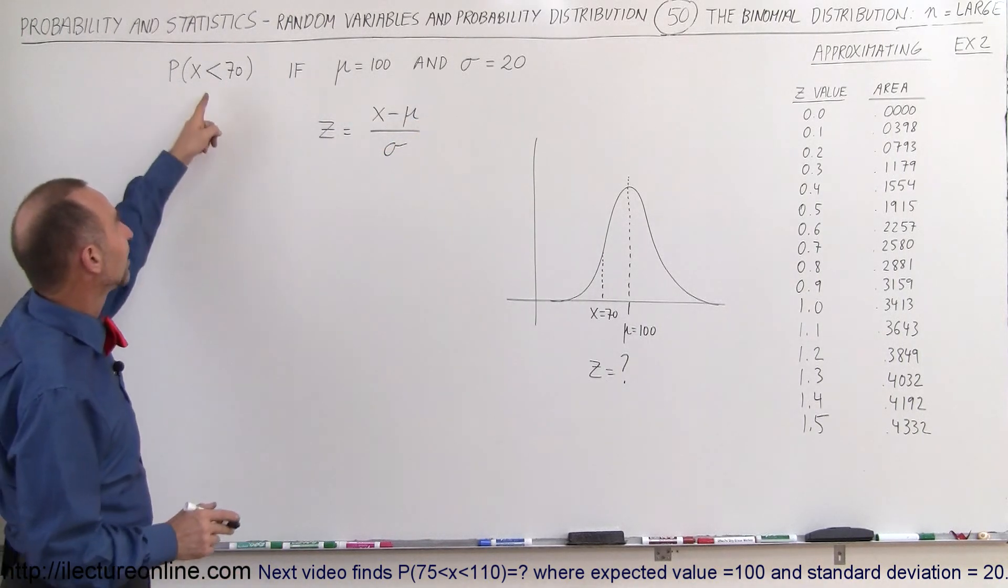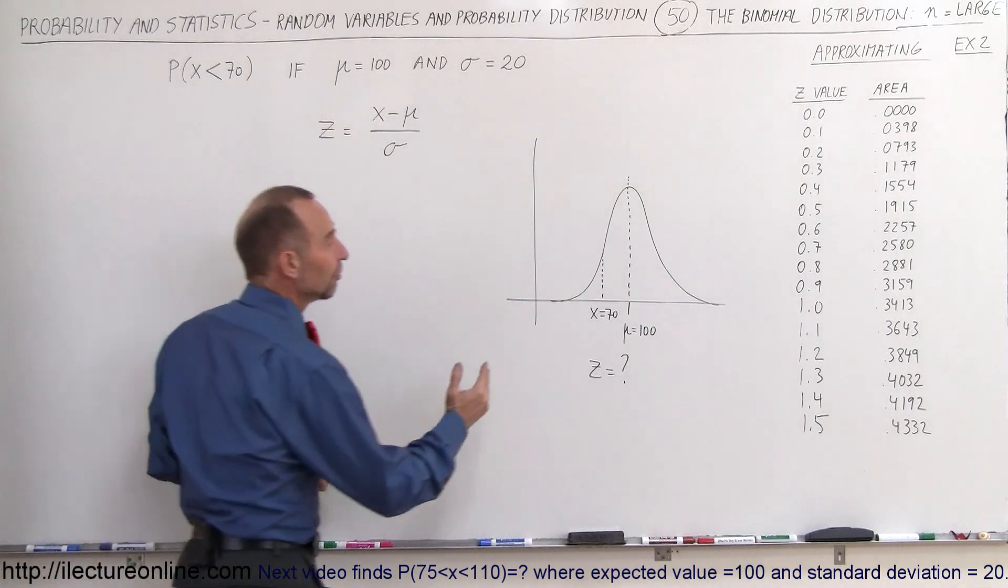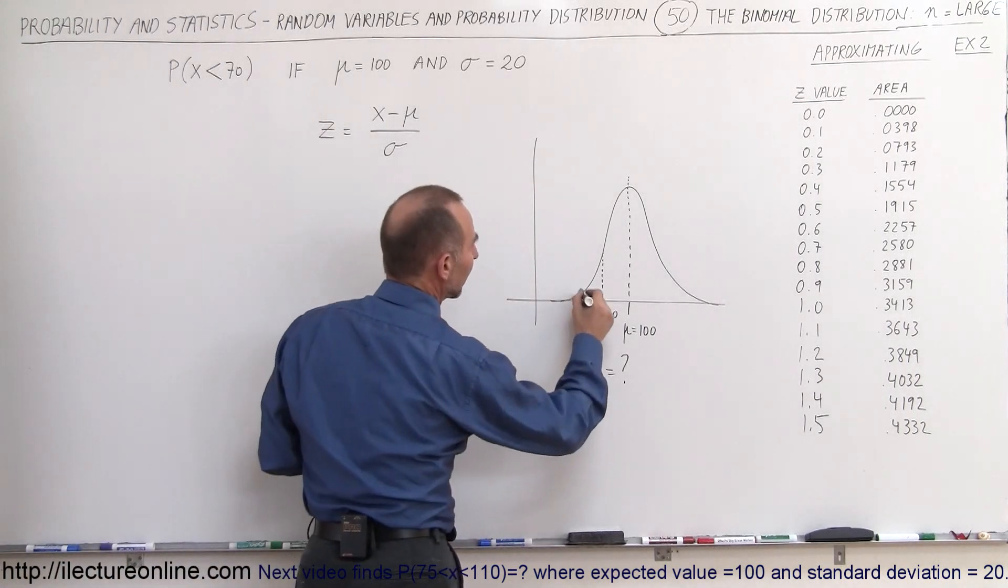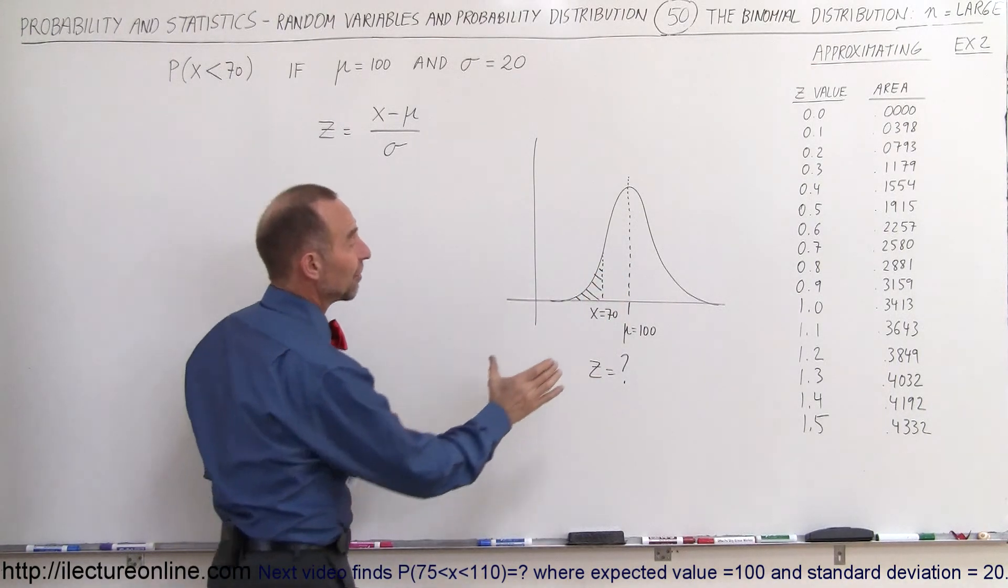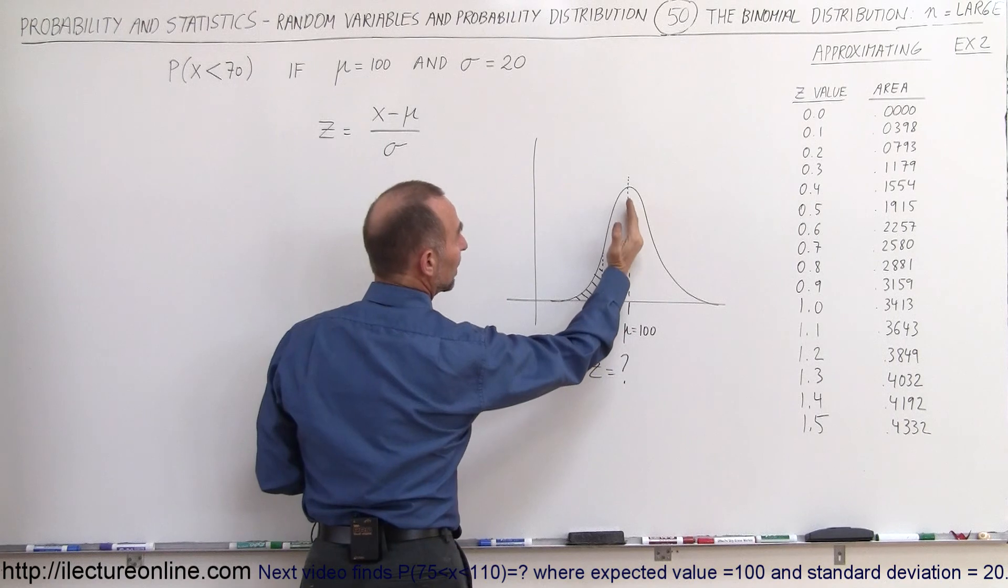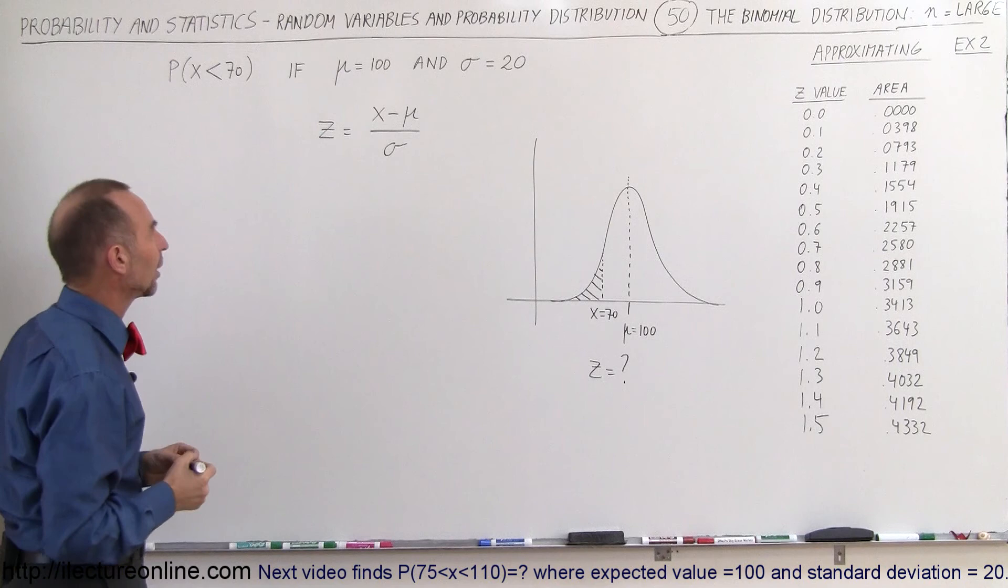Notice in this case, since x is less than the expected value, we're looking for the area right in here. The way you can find that is you can find this area right here, which is easy. That would be equal to one-half, and subtract this area from it. I'll show you in just a moment why we would want to do it that way.